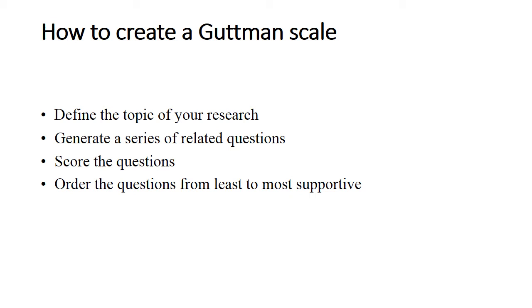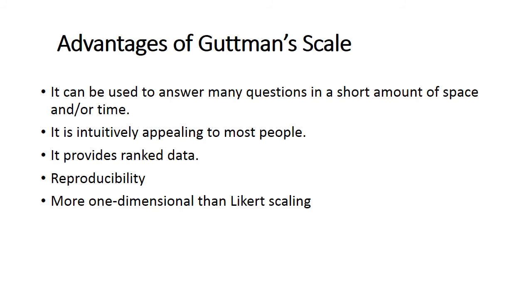To create a Guttman scale, the first step is to define the topic of your research — for example, positive mental health, or the attitude of students towards online teaching or lockdown. Then, a number of items or questions related to the topic are noted down. The total score equals the number of questions, so 50 questions means a maximum score of 50. Finally, questions are ordered from the least to the most important or most difficult.